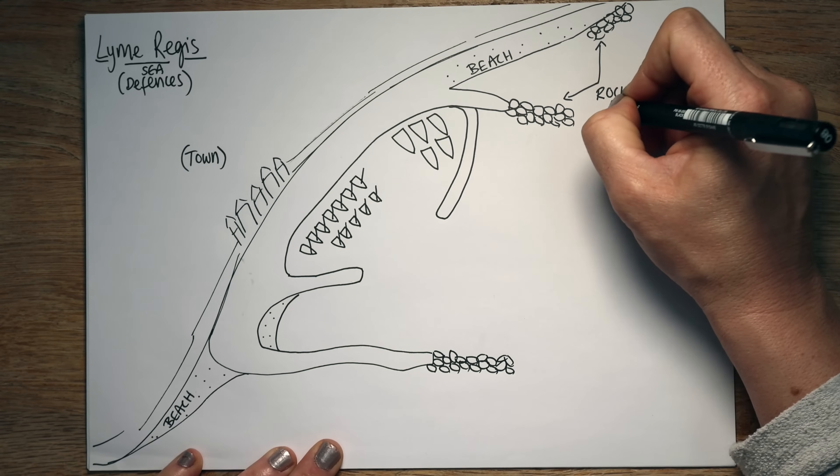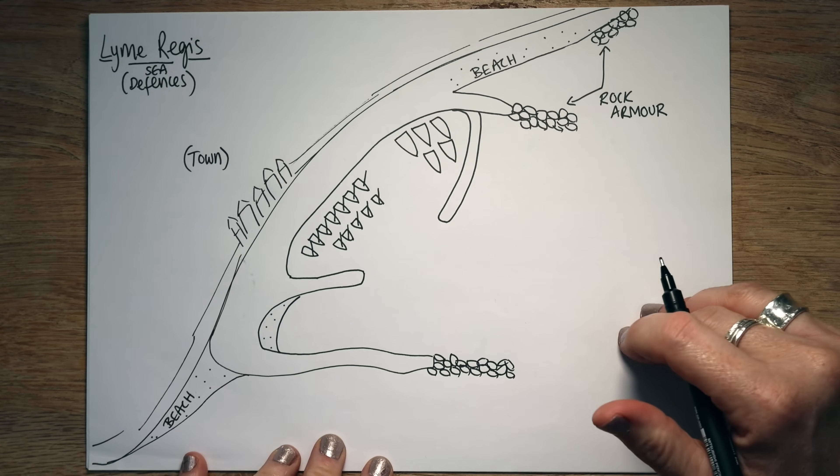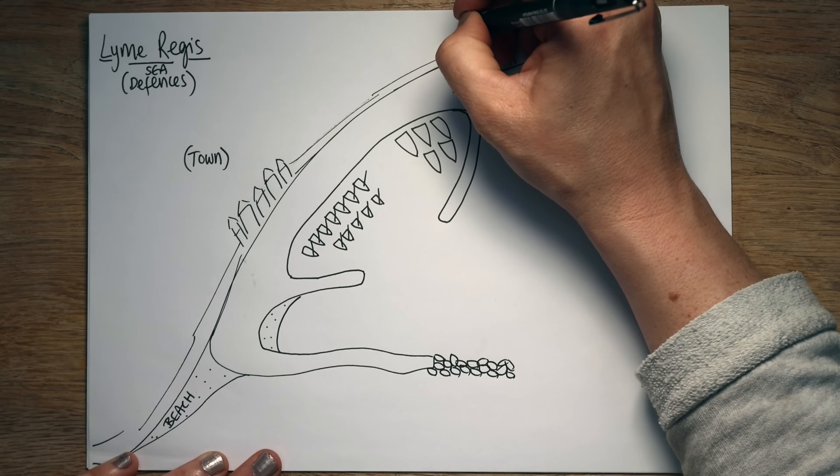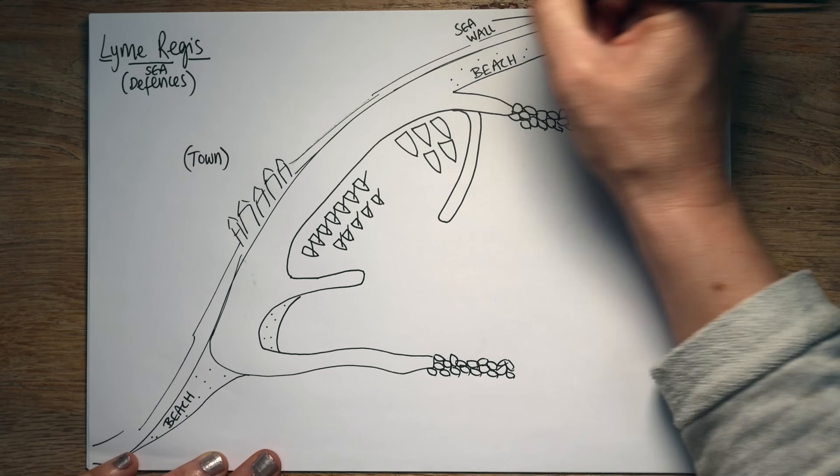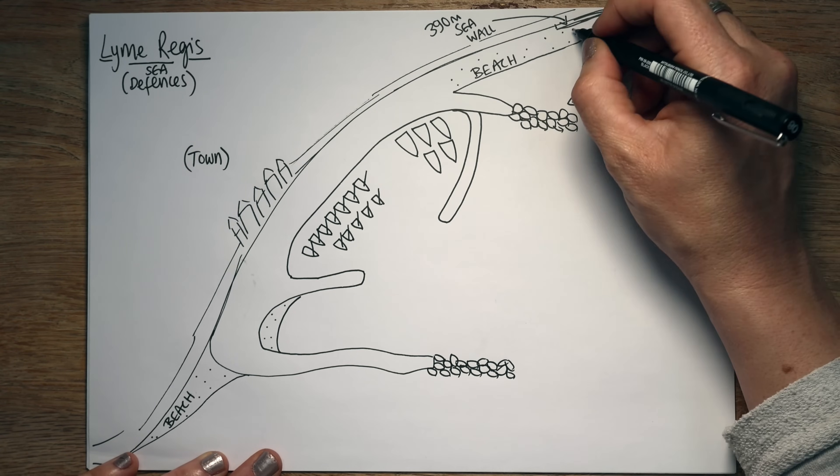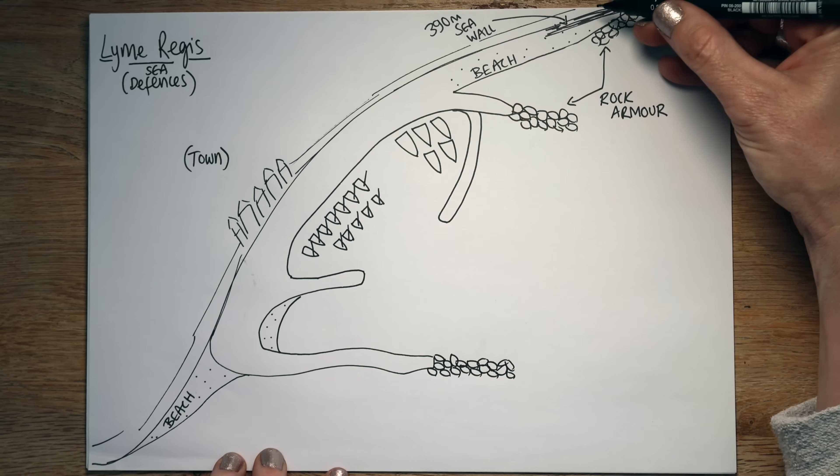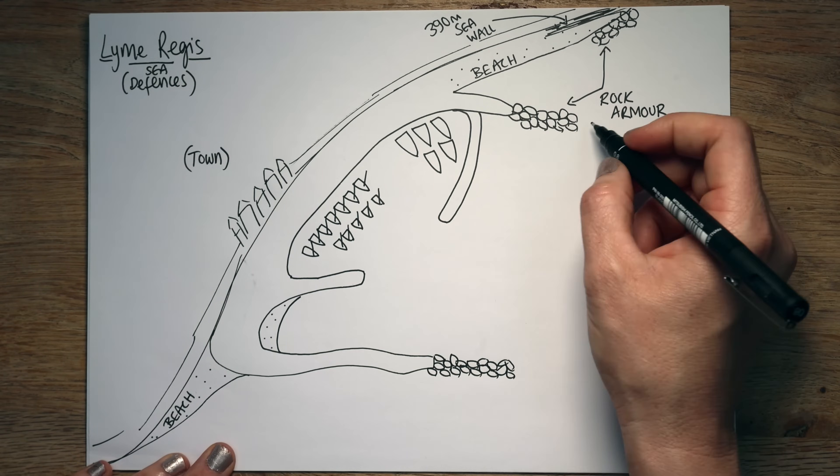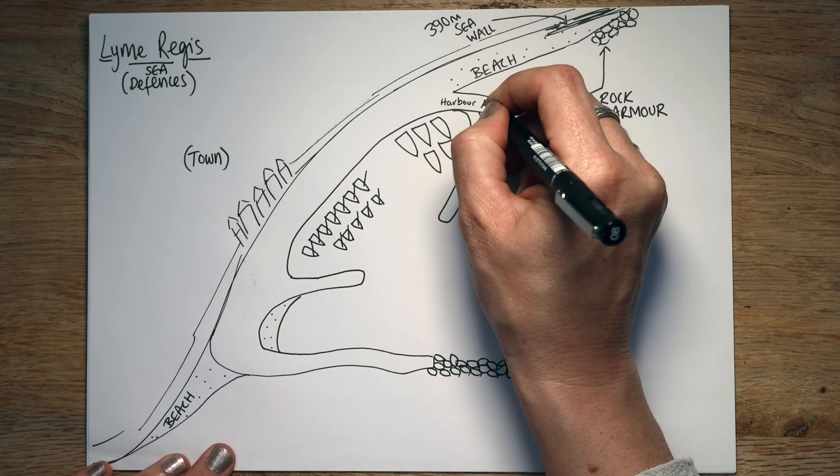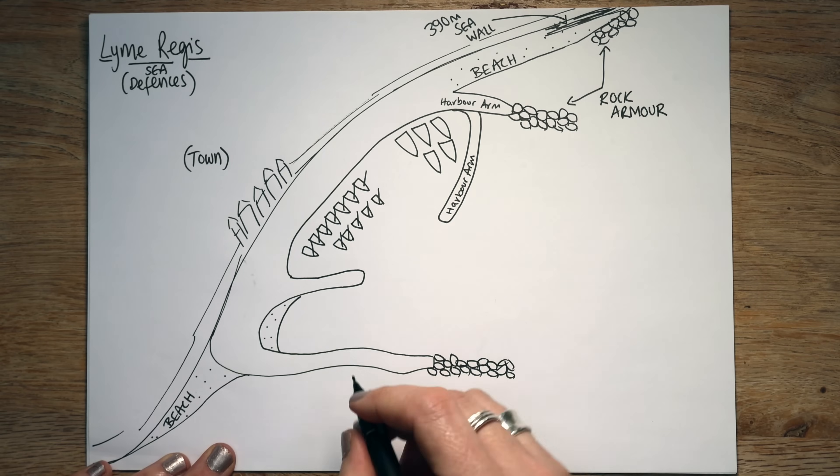So rock armour, as I said, is large granite boulders. They put them on ships. They bring them over from Norway. Here they've been placed in front of a section of seawall. So what you've got basically is the seawall here. There's about 390 metres of the seawall. And then essentially to keep the seawall in good condition, they add the rock armour to it to protect it. Over here is a bit different. They've put it on to sort of extend that harbour arm.